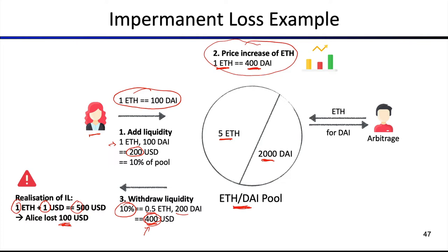This impermanent loss is really an example of the market dynamics of an automated market pool, and it's something that every liquidity provider can be exposed to. Naturally, if you provide assets like DAI or USDC — stablecoin assets — to a pool, then the likelihood that these will diverge significantly is not that big, but it still can happen if, for example, DAI were to de-peg or lose its peg.